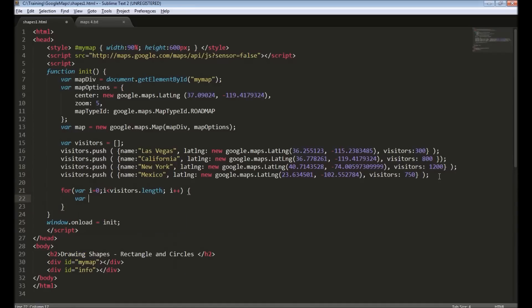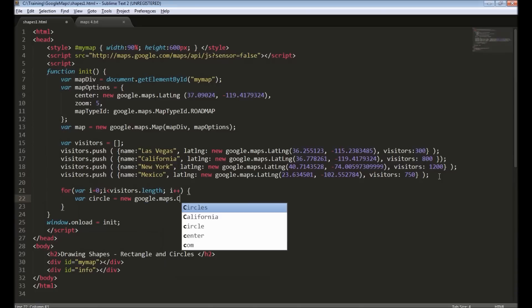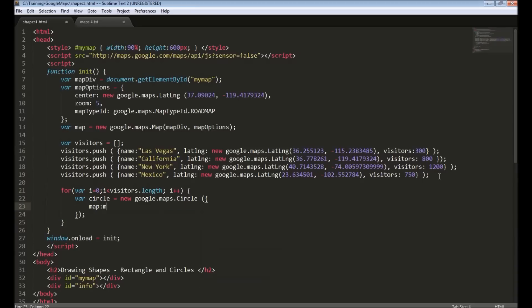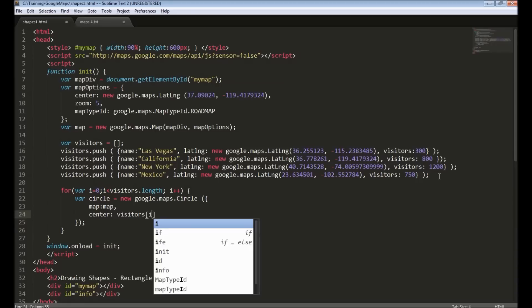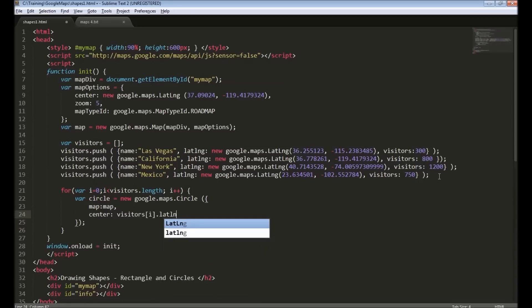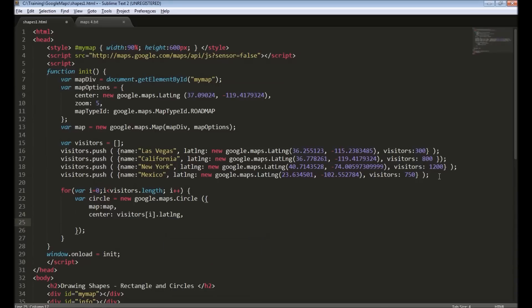How we can use this. I'll create a circle object and specify some options. First it's a reference to the map. Then center is the visitors[i].latlong. Next we have to specify the radius.